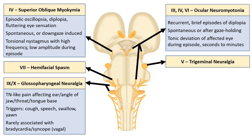Slightly related to trigeminal neuralgia is glossopharyngeal neuralgia. You get similar sharp, stabbing, TN-type pain, but affecting usually the ear, throat, or angle of the jaw, and it can be triggered by coughing, yawning, sneezing, or talking. Very rarely, this has been associated with syncope, because of the connections between the glossopharyngeal and vagal nerve — you sometimes get vagal activation causing bradycardia and occasionally syncope. That has definitely come up in an MCQ.